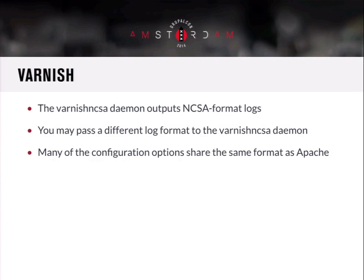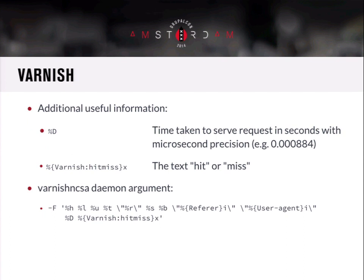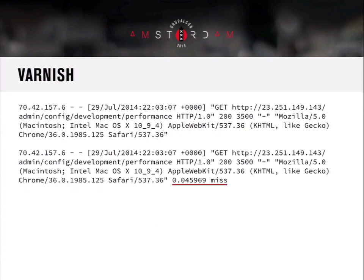VarnishNCSA already gives us nice logs that include the host header. You can pass a different log format to the daemon when it starts, and most options look the same as Apache. Varnish will give you seconds with microsecond precision, and it can give you hits or misses. So if you have disk capacity available to log Varnish logs to disk, you could have a historical record of hits and misses. If you want to start Varnish in this way, this is what you'd pass to VarnishNCSA — and since we already have a nice request header with everything we want, we just get the duration information from it.